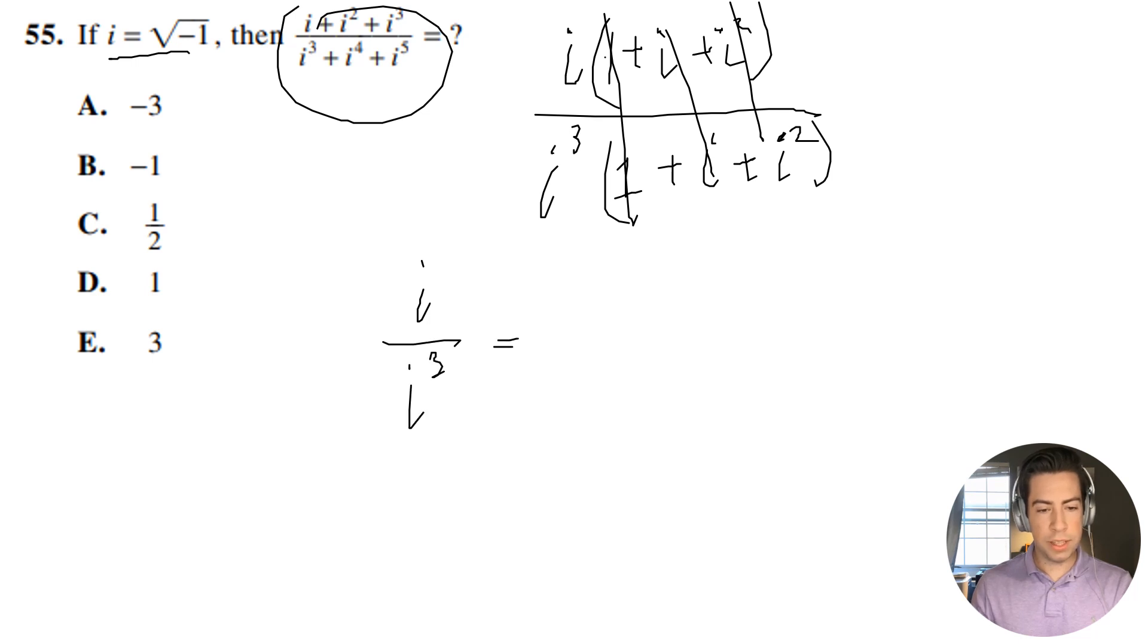So this is going to be equal to 1 over i squared. And that's going to be 1 over the square root of negative 1 squared. So I'm going to have 1 over negative 1, which is going to be negative 1. So my answer is b.